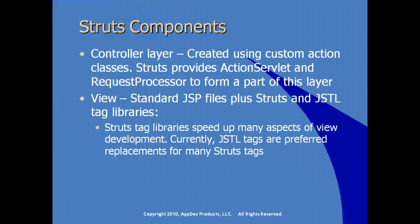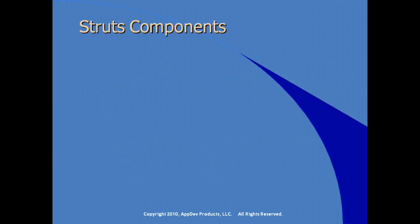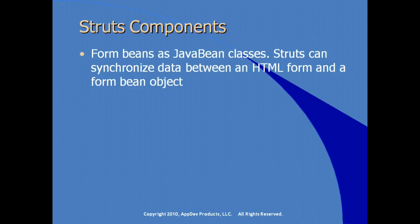The Struts tag libraries speed up many aspects of view development. Currently, because JSTL has been rolled into the specification and most tags are available in modern application servers, it's preferable to use JSTL tags as replacements for many Struts tags. A vocabulary note: views in the Struts framework are known as forwards or action forwards. Another component is form beans — Java bean classes that, when designated as form beans, allow Struts to synchronize data between an HTML form and a form bean object, similar to managed beans in the JSF framework.